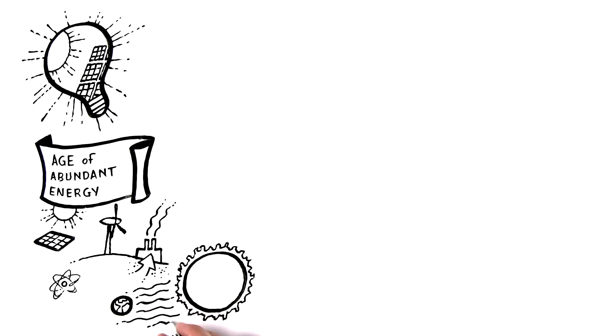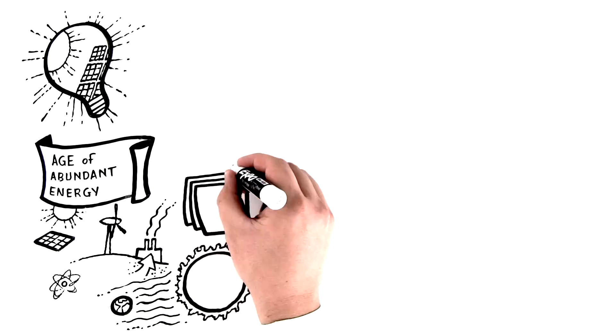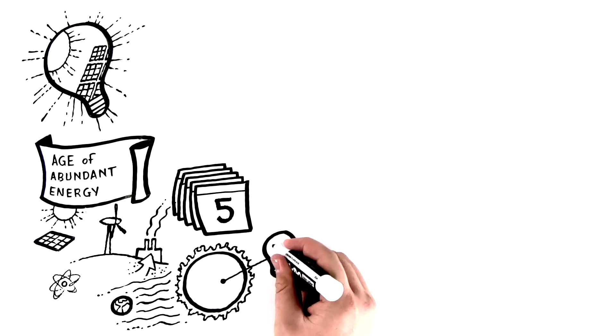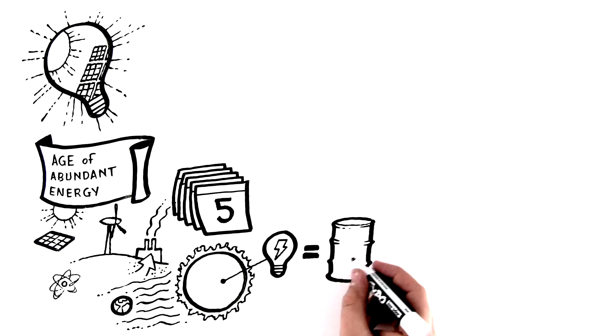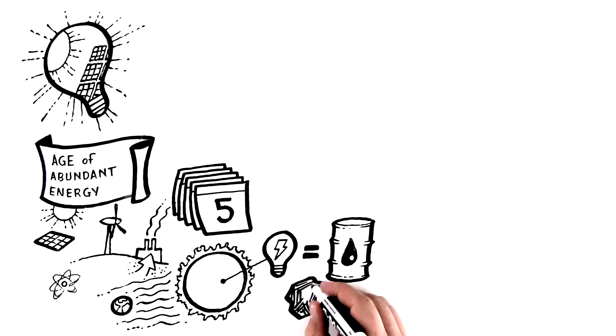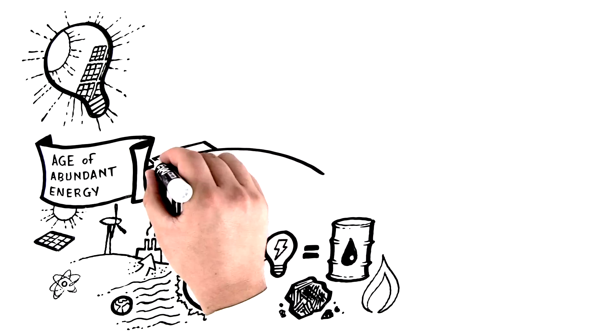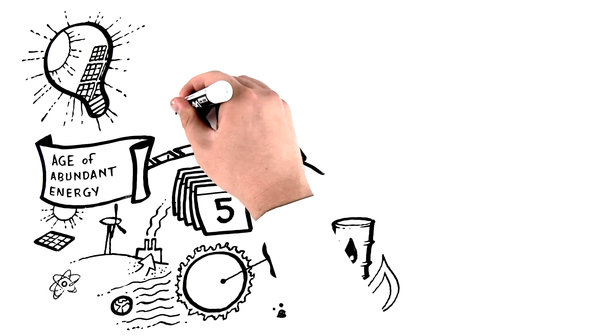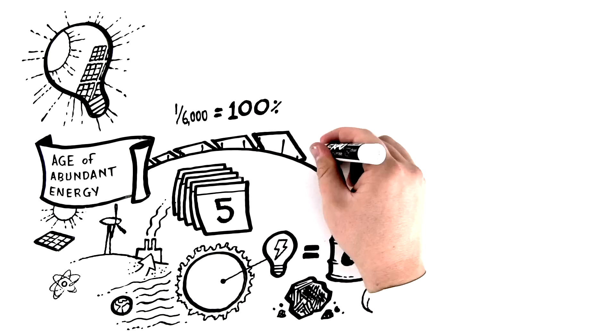In only five days, the sun provides the Earth with energy equivalent to all proven supplies of oil, coal, and natural gas. If humanity could capture just one part in 6,000 of available solar energy, we could meet 100% of our energy needs.